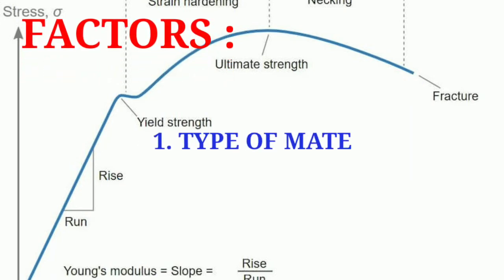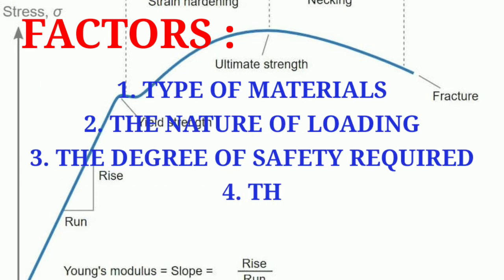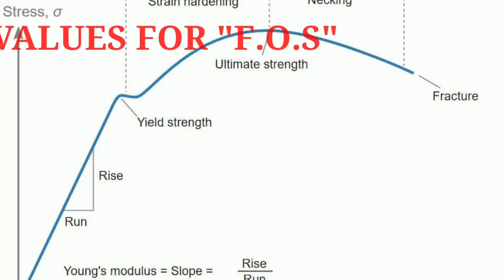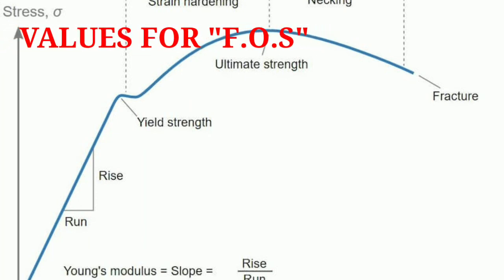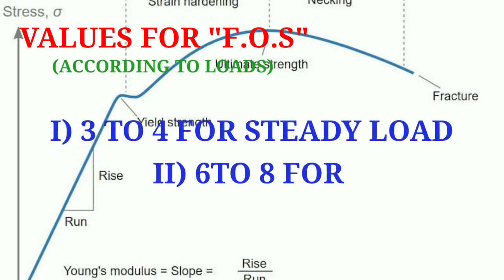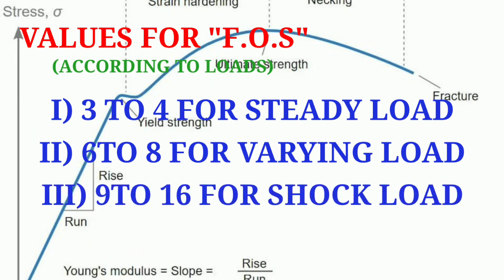The number of factors in factor of safety are: first, type of materials and nature of loading; second, degree of safety required; third, degree of economy desired. Based on these factors, it works. Values for factor of safety according to loads: 3 to 4 for steady loads, 6 to 8 for varying loads, and 9 to 16 for shock loads.